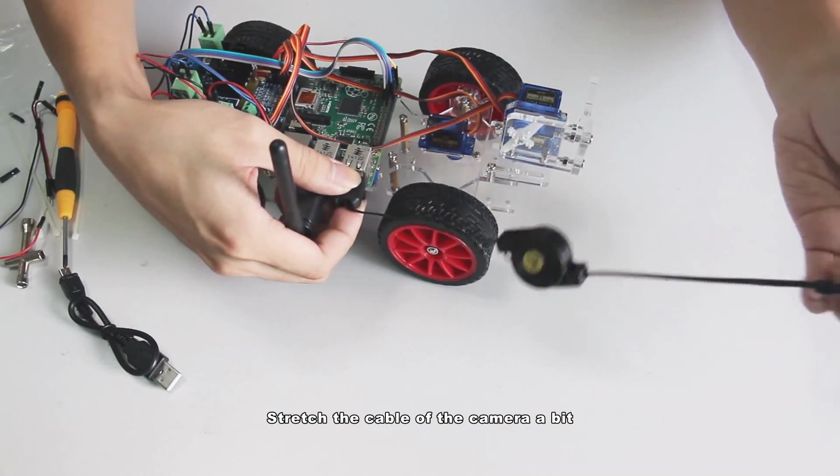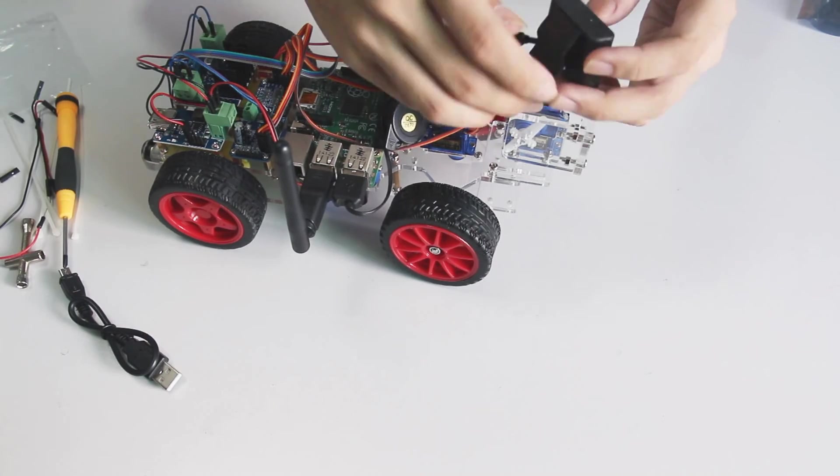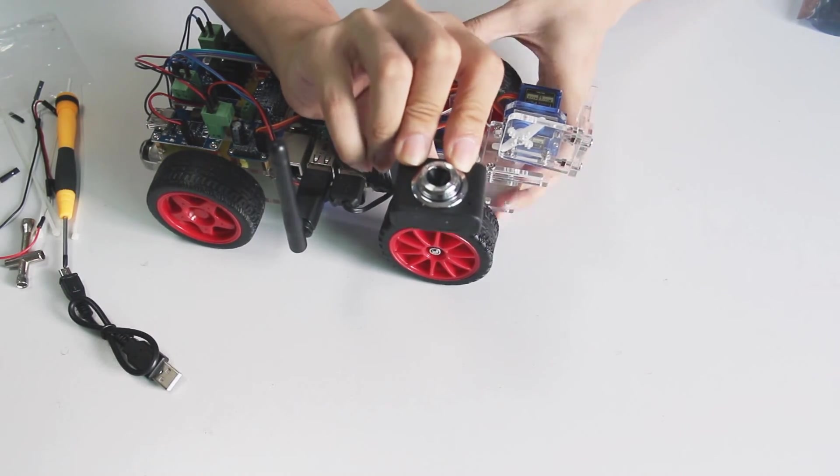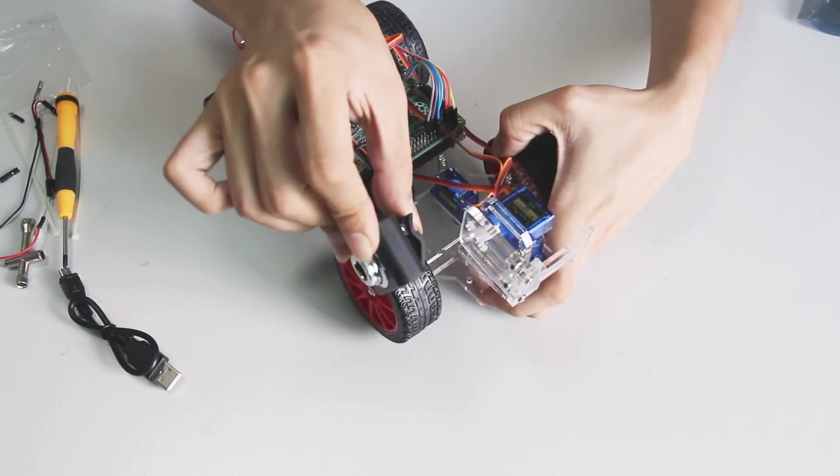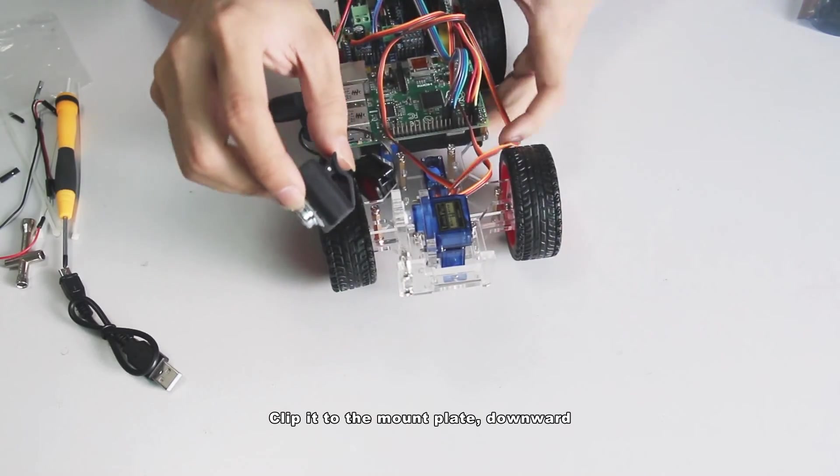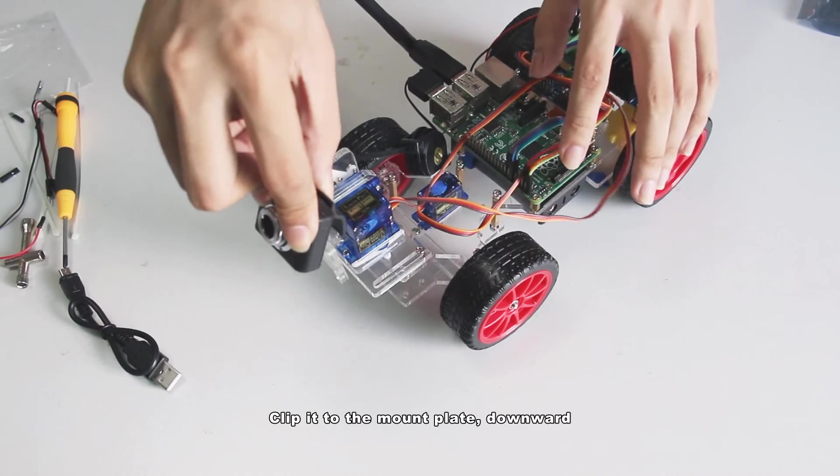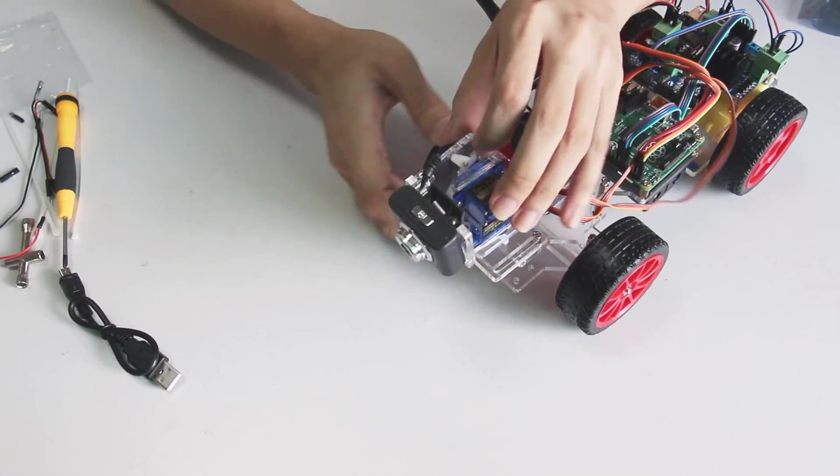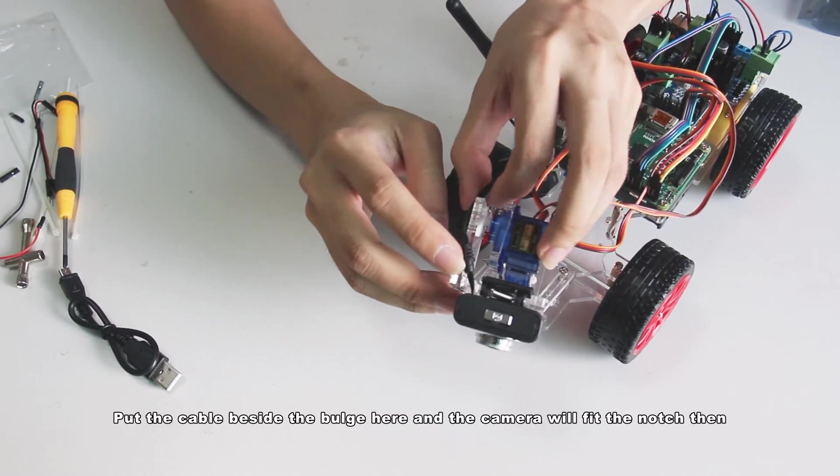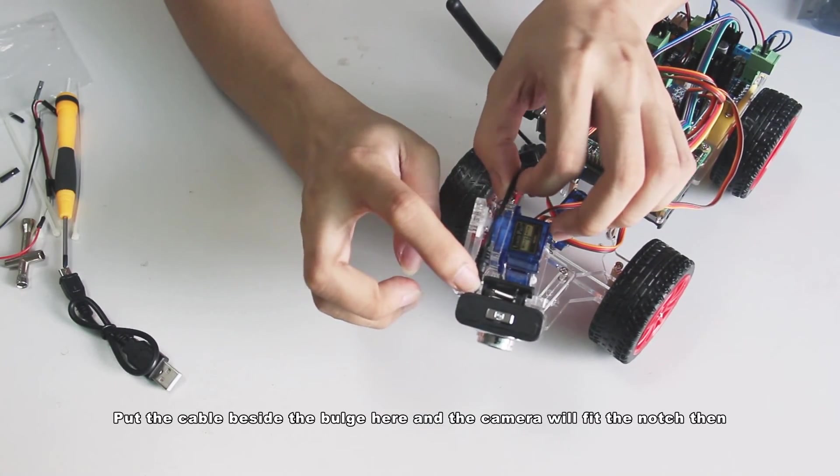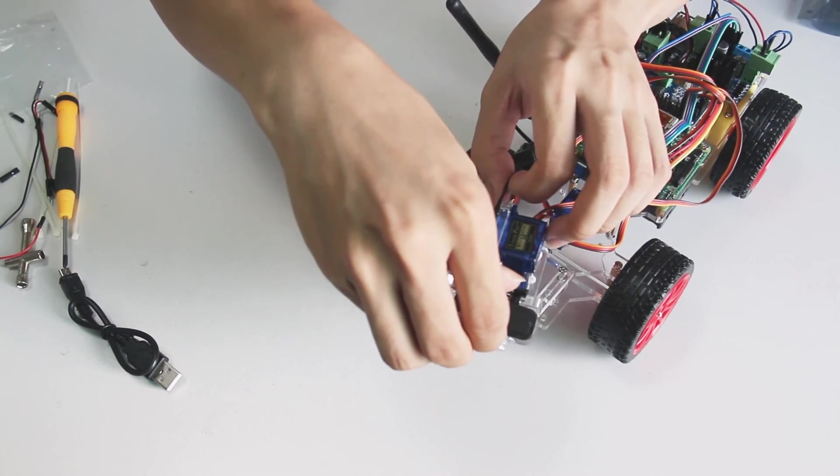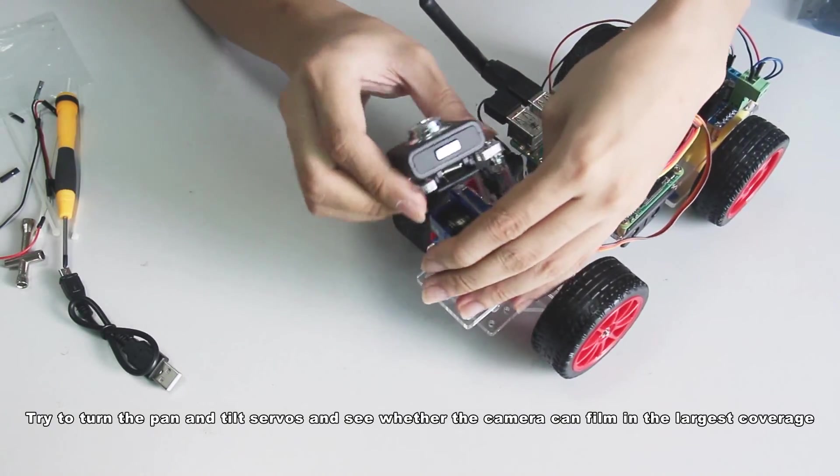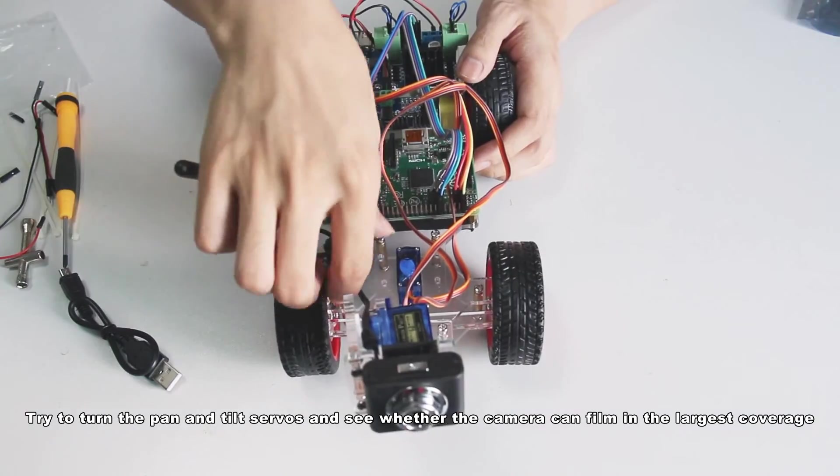Let's stretch the cable of the camera a bit. Clip it to the mount plate downward. Put the cable beside the bulge here and the camera will fit the notch then.